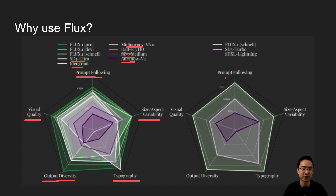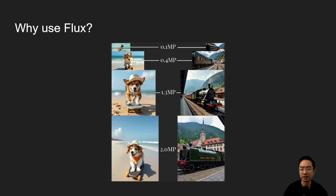On the right, it compares Flux against SD3 Turbo, SDXL, and Lightning — and again Flux Schnell is clearly outperforming in all categories. Another benefit is that Flux can generate images ranging from as small as 0.1 megapixels all the way up to 2 megapixels, offering a huge variety of sizes while still maintaining strong output quality.